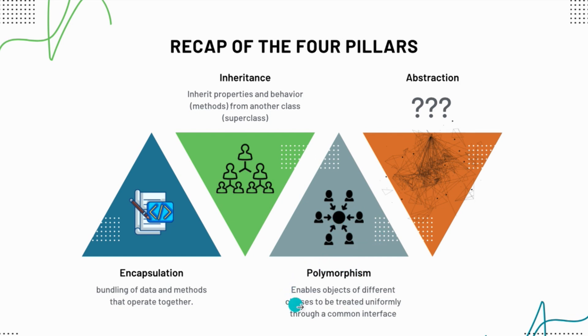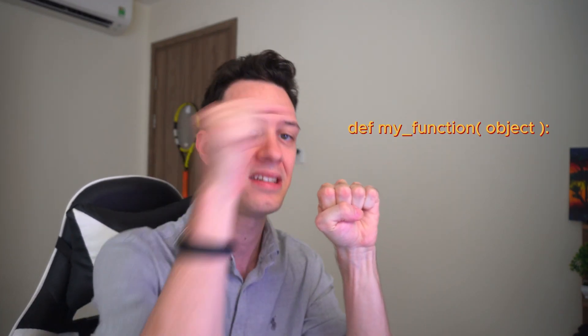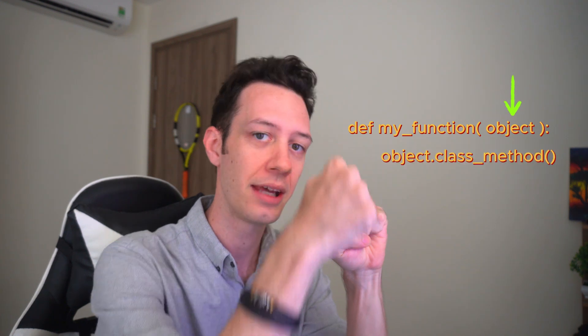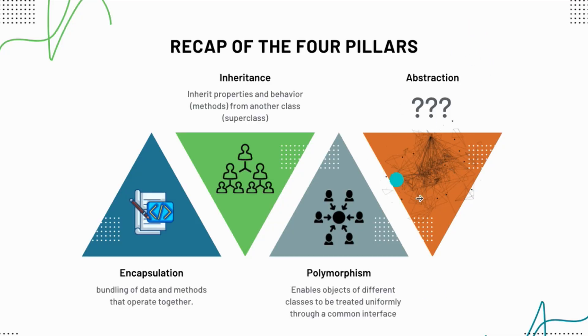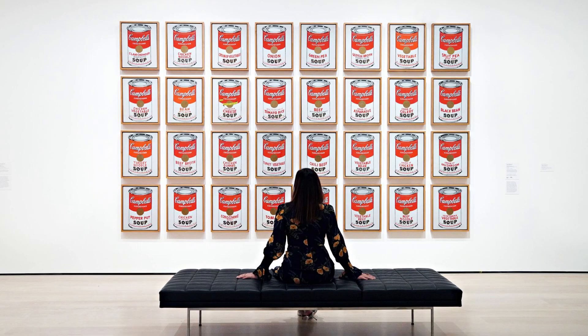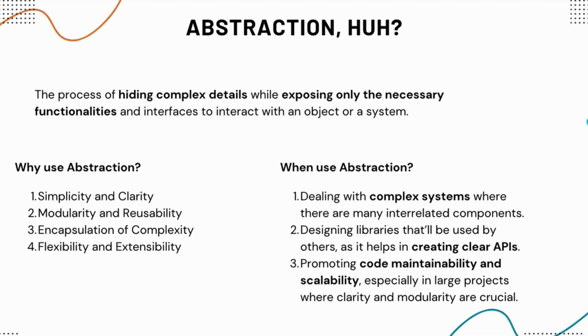Last episode we addressed polymorphism, which enables objects of different classes to be treated uniformly. We create a function that takes an object and links it to a method of a certain class — and because many classes share the same method name, we can pass those objects in through a single function. And today it's abstraction.